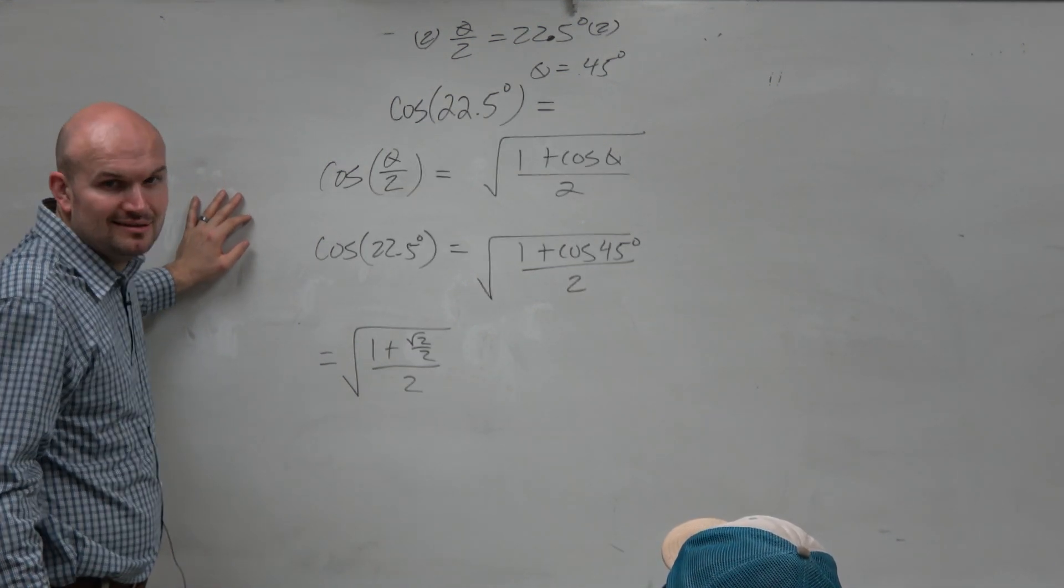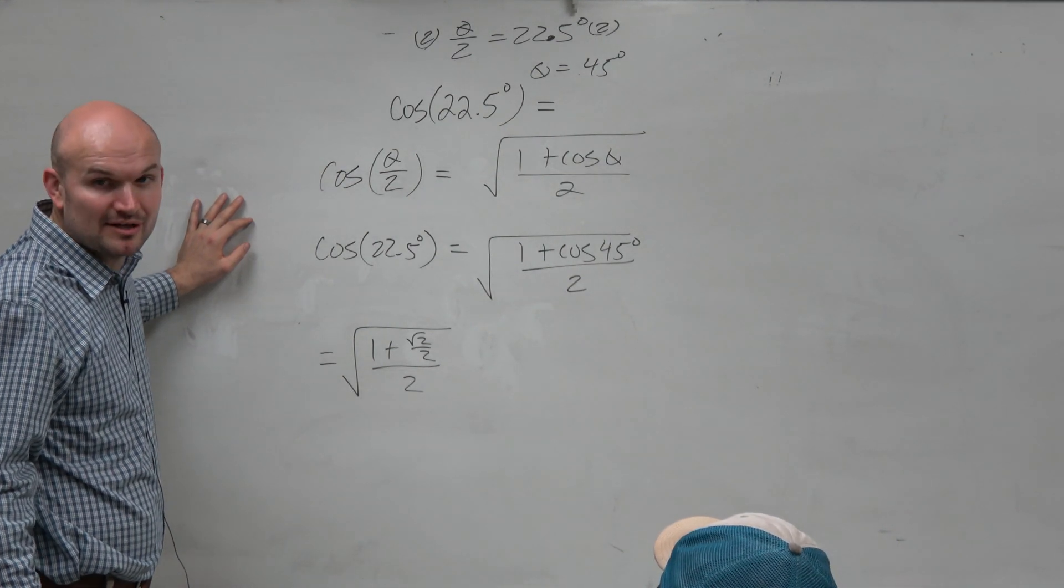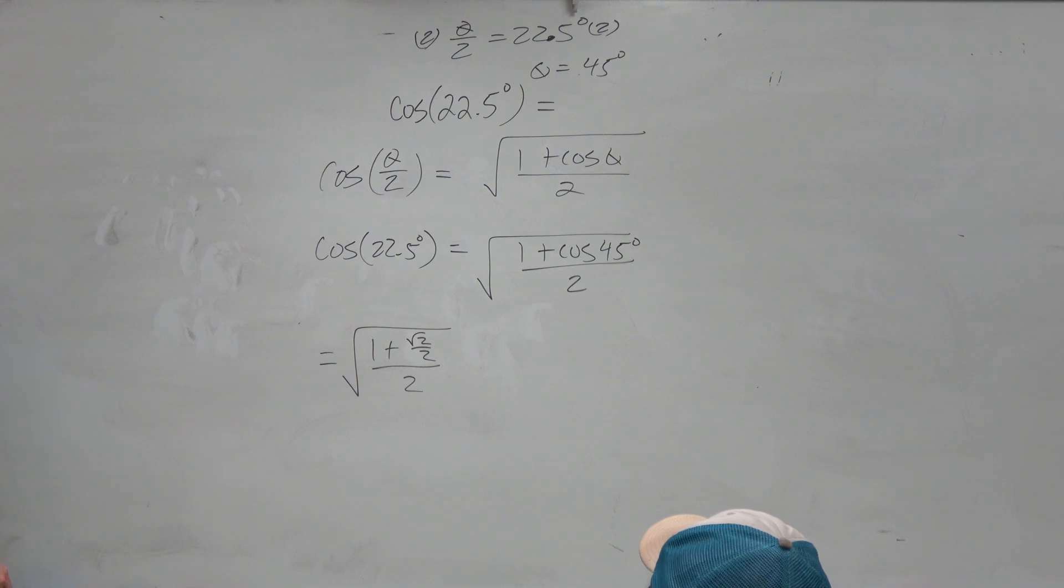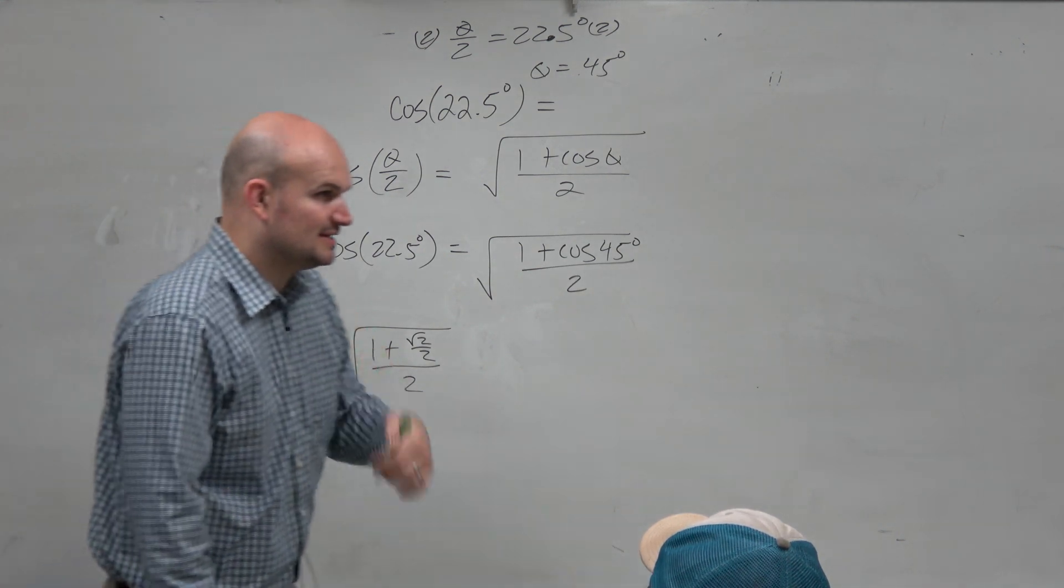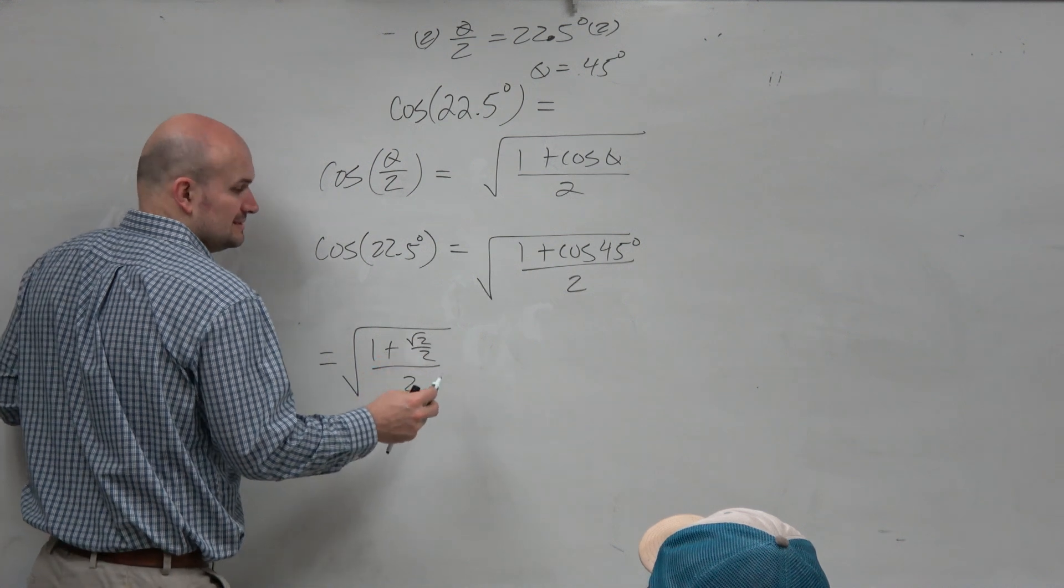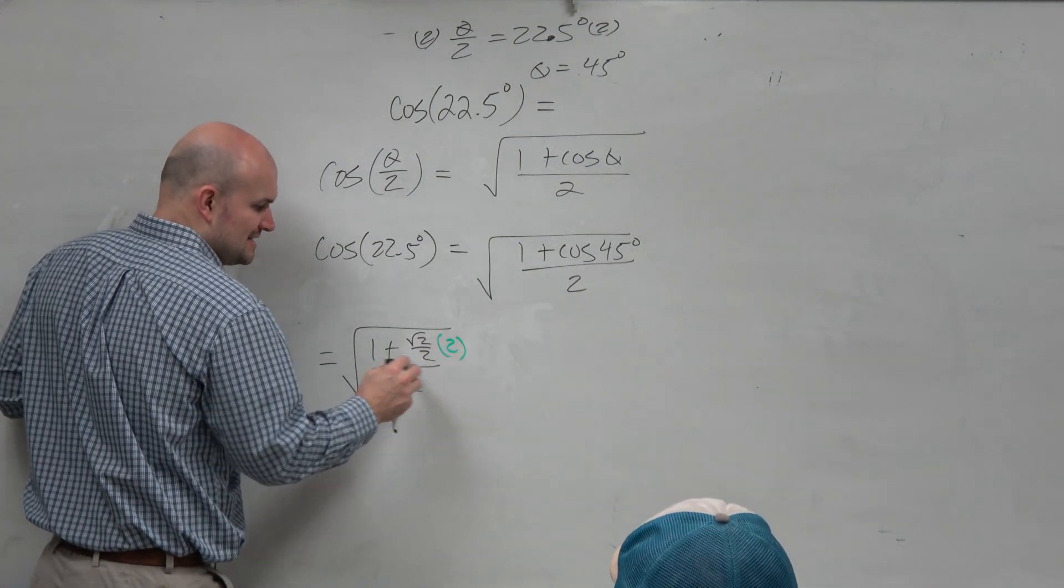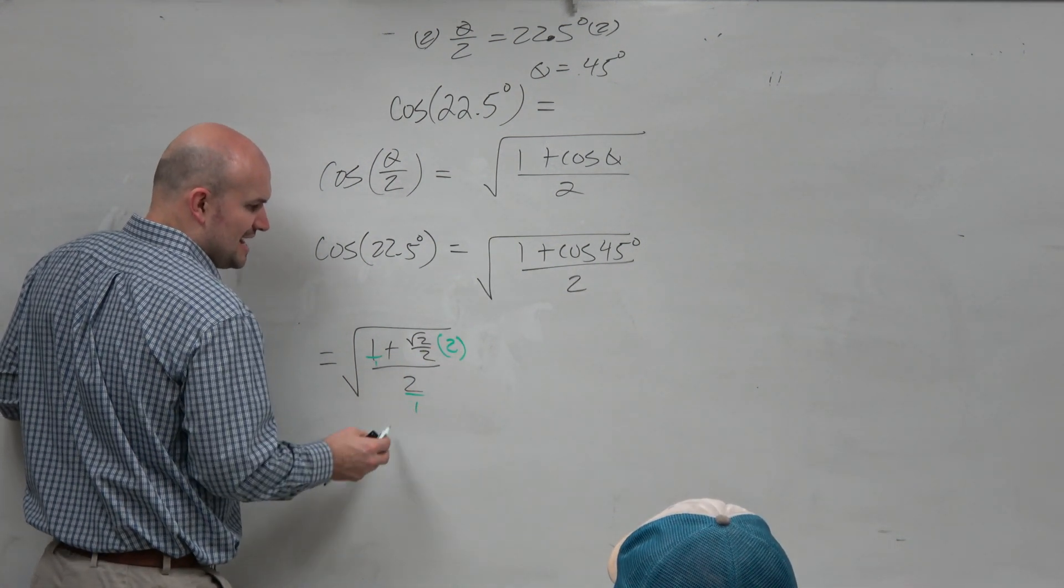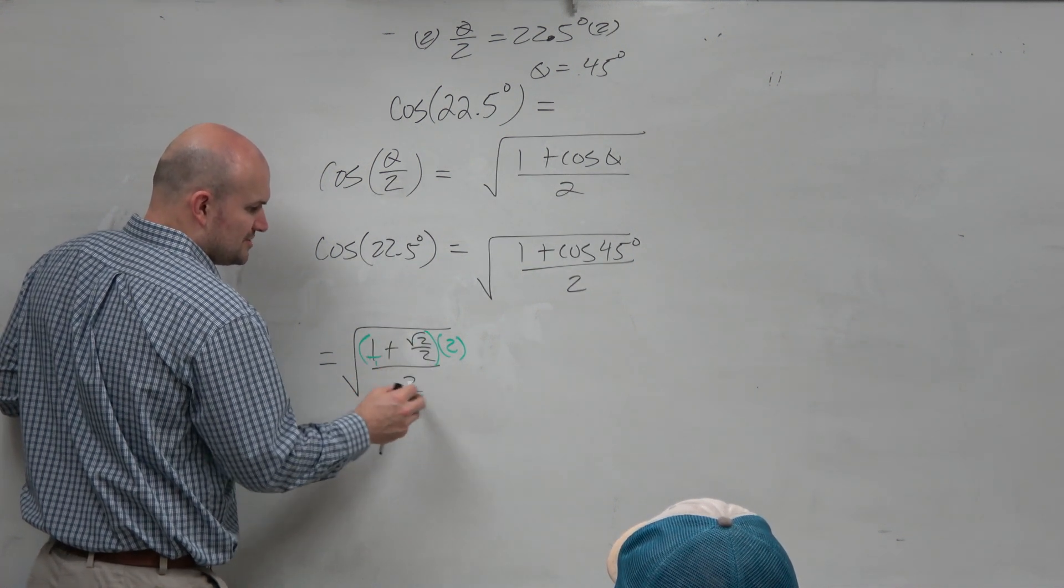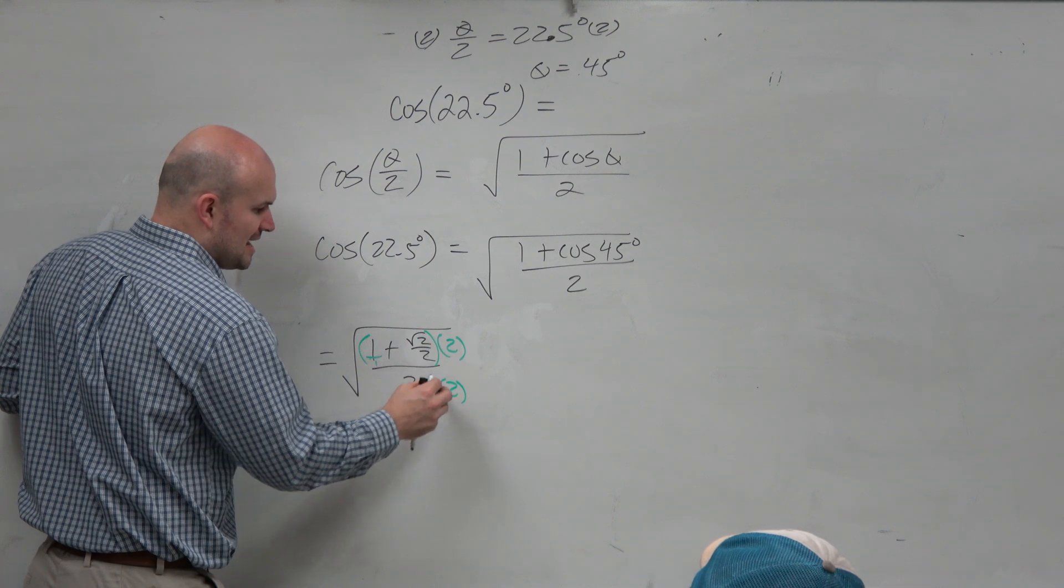And then, what we have is a complex fraction under a radical. Now, fortunately, last class period, we refreshed ourselves with complex fractions. If we don't like the complex fractions, we can get rid of it by multiplying by the common denominator. So the common denominator, look at all the denominators: 2, 1, and 1. The common denominator is 2. So multiply by 2 on the top and the bottom.